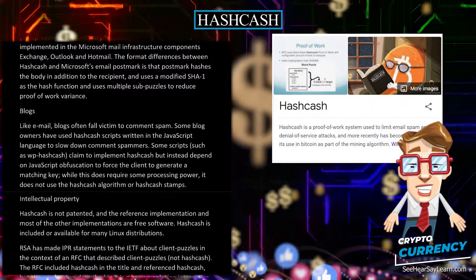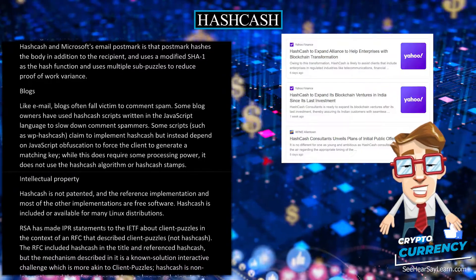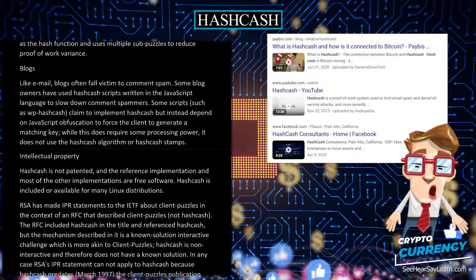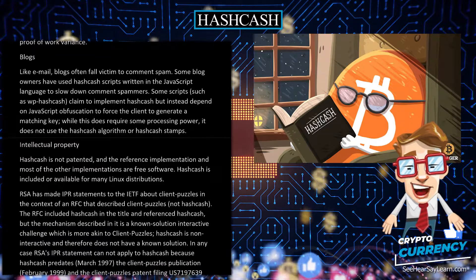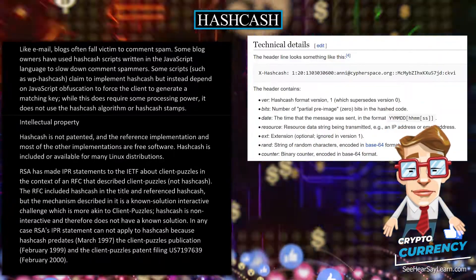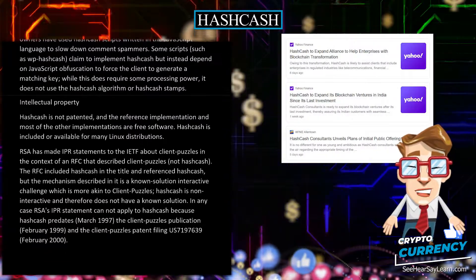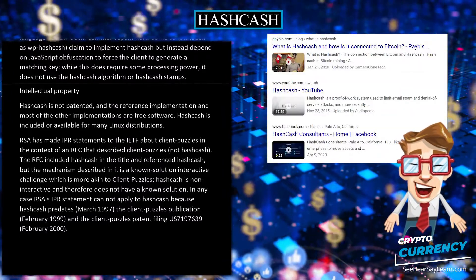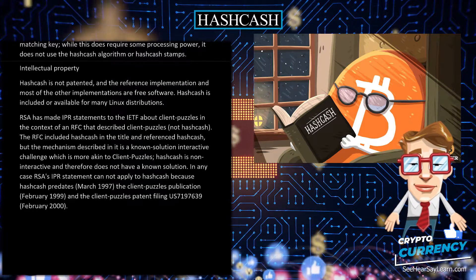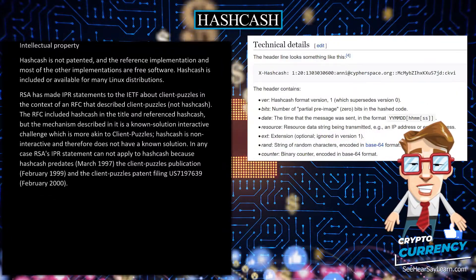Intellectual Property. Hashcash is not patented, and the reference implementation and most other implementations are free software. Hashcash is included or available for many Linux distributions. RSA has made IPR statements to the IETF about client puzzles in the context of an RFC that described client puzzles, not hashcash. The RFC included hashcash in the title and referenced hashcash, but the mechanism described is a known-solution interactive challenge more akin to client puzzles. Hashcash is non-interactive and therefore does not have a known solution. In any case, RSA's IPR statement cannot apply to hashcash because hashcash predates, March 1997, the client puzzles publication, February 1999, and the client puzzles patent filing US 7197639, February 2000.